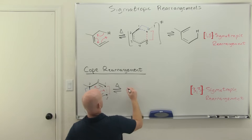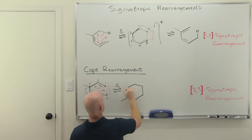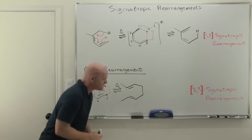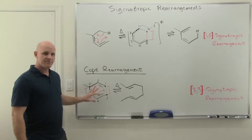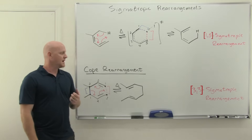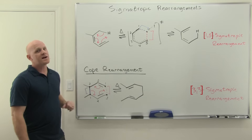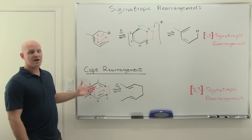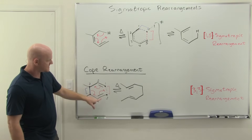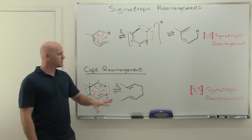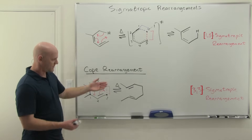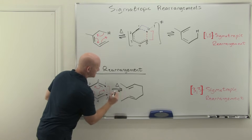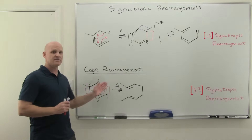Let's draw the COPE product. We're going to have a new bond right there, a pi bond here, and a pi bond here. Most of the time in these equilibria you'll get a mixture of reactant and product, and you can often predict which predominates. In this case, it's going to be about the more substituted alkene — both alkenes in the reactant are monosubstituted, while both in the product are disubstituted. The more substituted alkene is more stable, so the product is favored in the equilibrium.